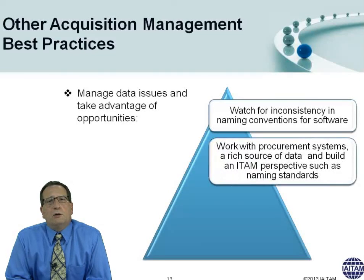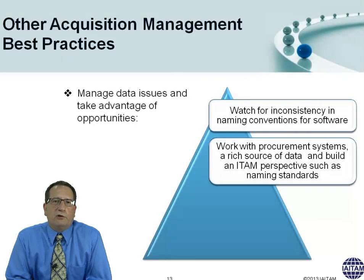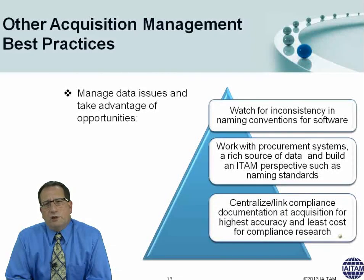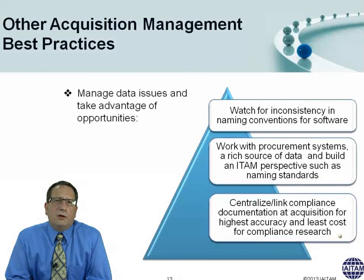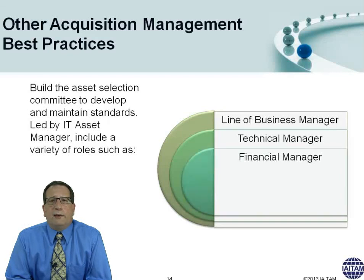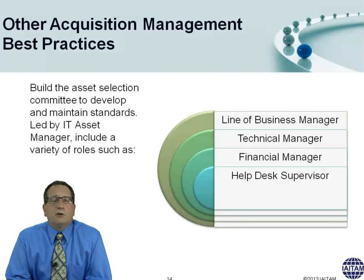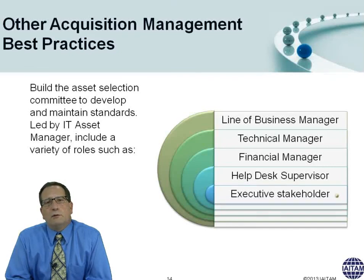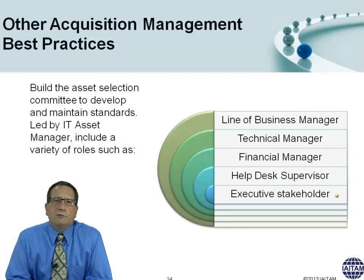Procurement and accounts payable systems can have a lot of information of interest to you. Look at centralizing compliance documentation with the actual asset purchased and linking those together. Also, build an asset selection committee that includes the line of business manager, the technical manager, the financial manager, and the help desk supervisor. These folks are involved in determining what should be standard and what shouldn't, and assisting with approval of non-standard requests. Executive stakeholders should support the decision either way.